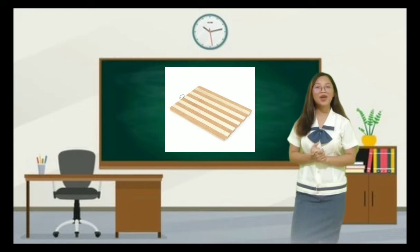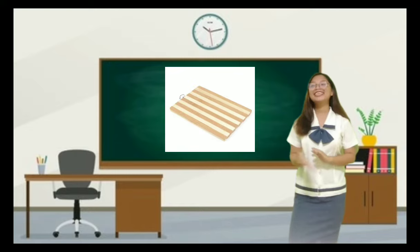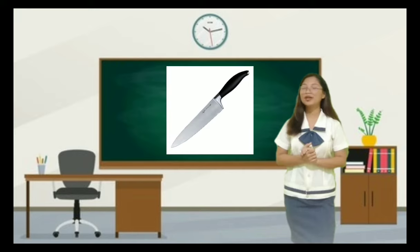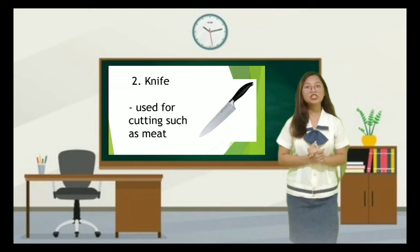Number one — very good, it is a chopping board. It is a durable board on which material is placed for cutting. Number two — Ron, a knife is composed of a blade fixed into a handle, used for cutting such as meat.